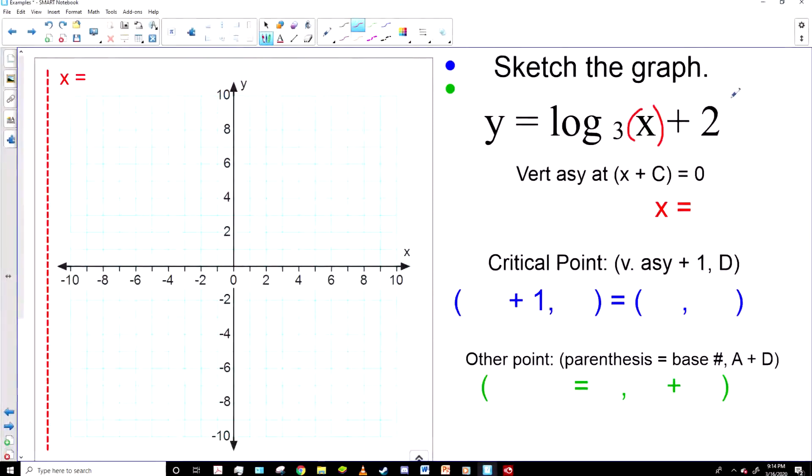So in this first one, if you notice that there is no C term. The 2 looks like it's part of the C term, but it's not. It's actually the D term. They will put parentheses around the C term if it has more than just the X on it. So here we just set the X plus C equal to zero, which is just zero, and we move the vertical asymptote to X equals zero.